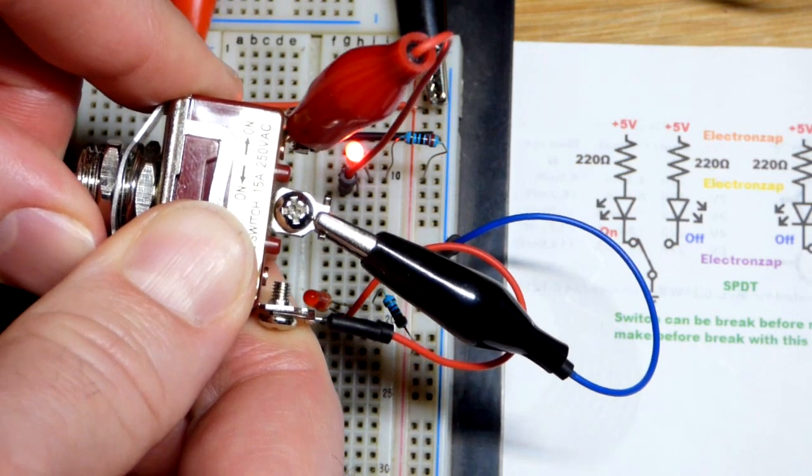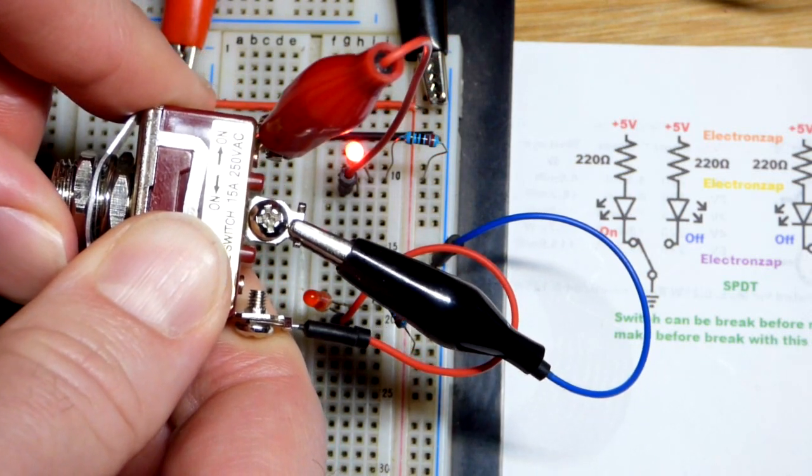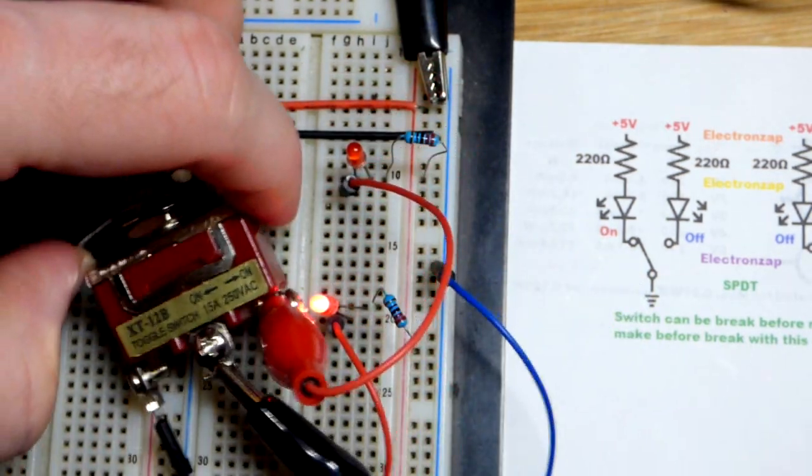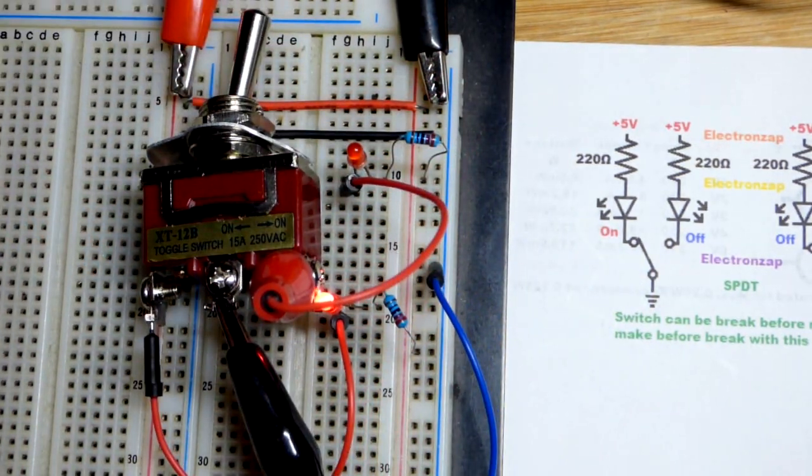But it went so fast you might not be able to tell, so I'm going to put it the other way. And you can see that it breaks the one connection before it makes the other right there. Hopefully you could see that.